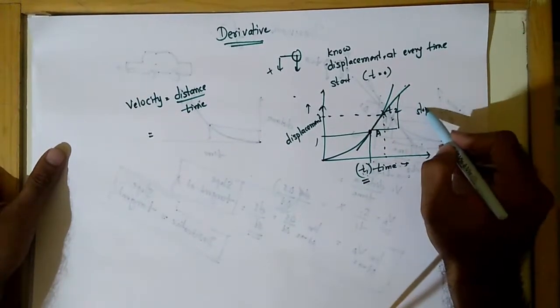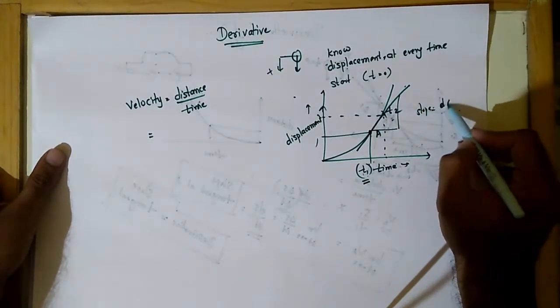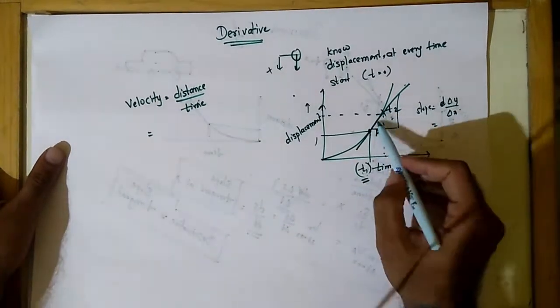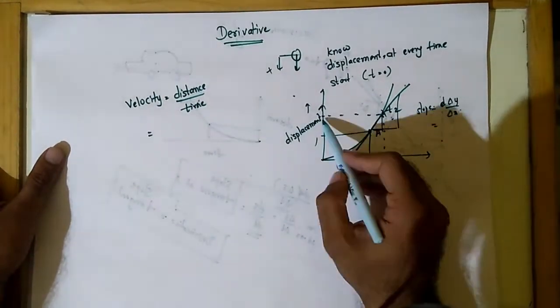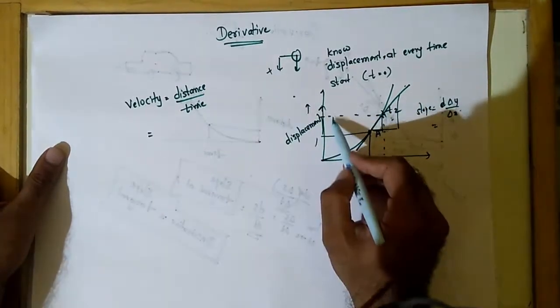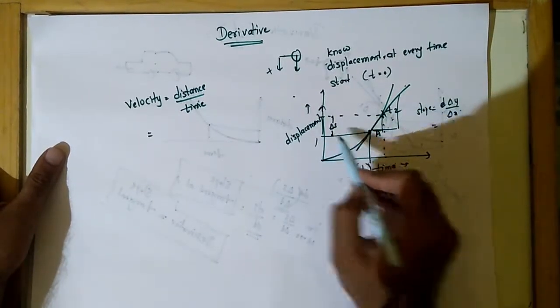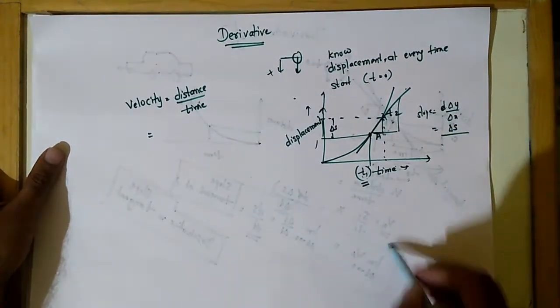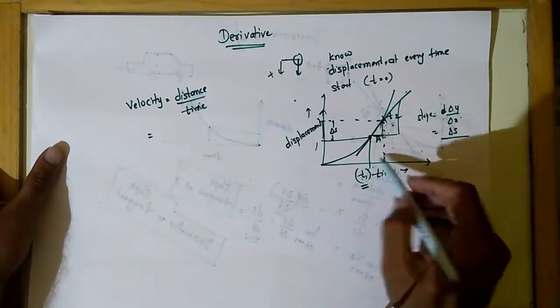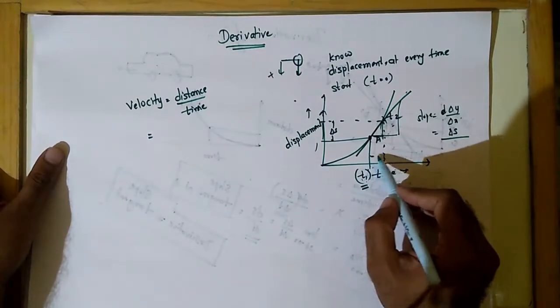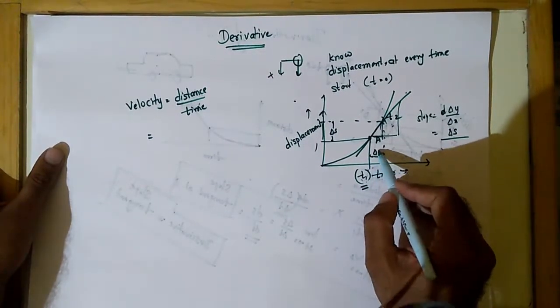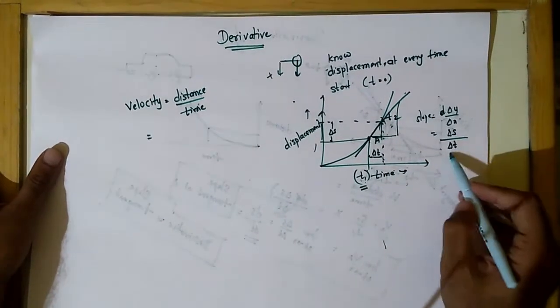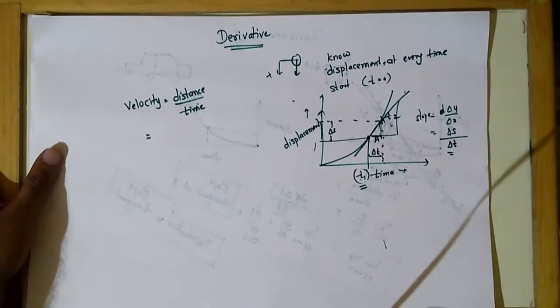What is slope? Slope is delta y over delta x. So what I get is delta y is delta displacement, delta s, and the time between t1 and t2 is delta t. This is the slope.